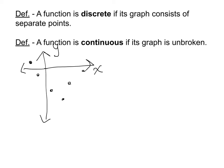It does pass the vertical line test because no vertical line is going through more than one point, but this would be called a discrete function because of the fact that it's made up of separate points.